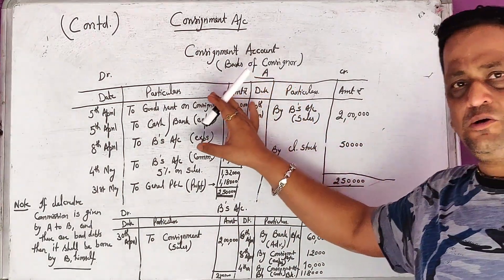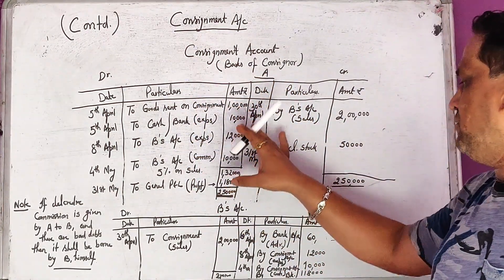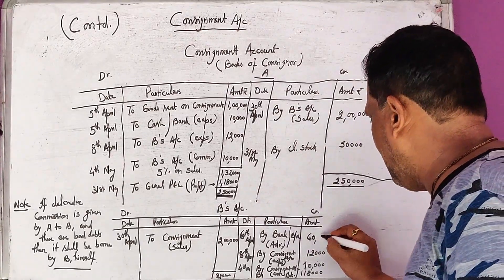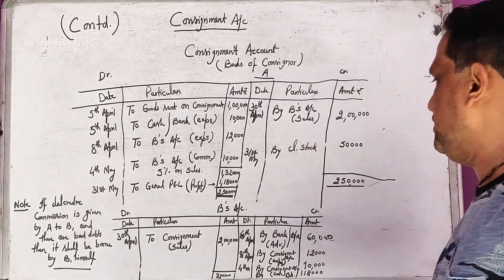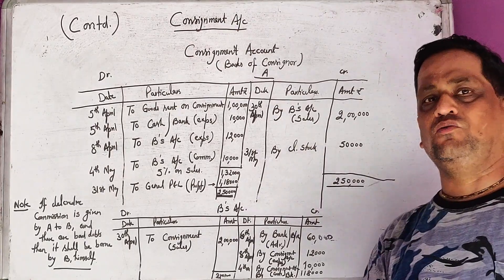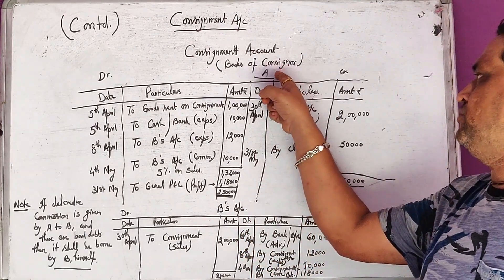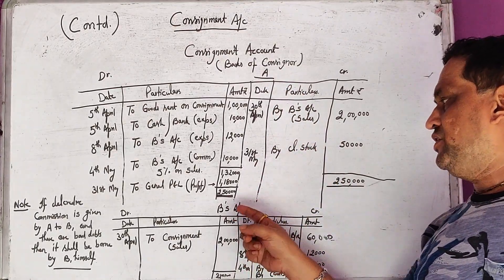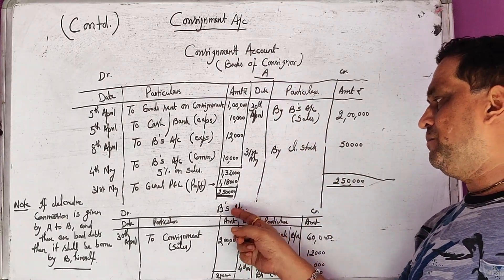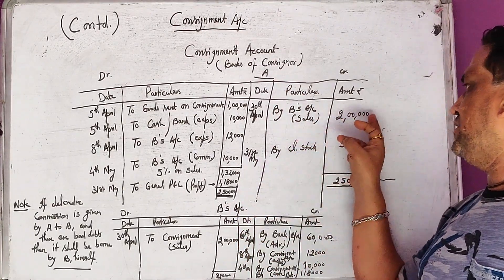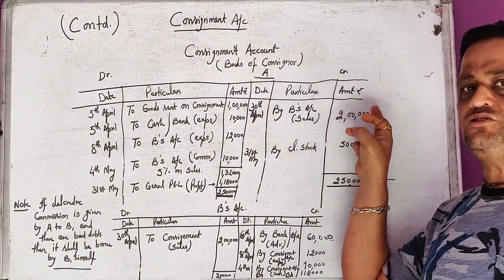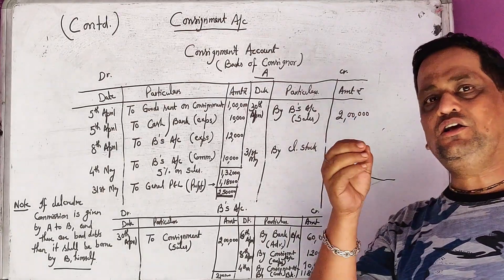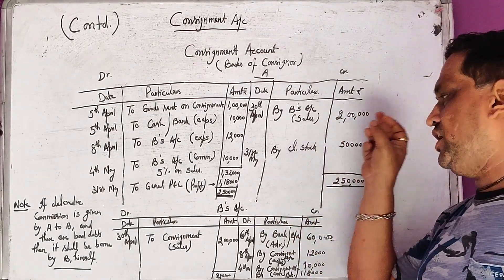The first account we prepare calculates profit or loss. Next, the second account to prepare is the consignee's account — that is B's account in the books of A. When A prepares B's account, first of all he notes down the total sale. The total sale in our example was 2 lakhs, and we have to post this transaction.